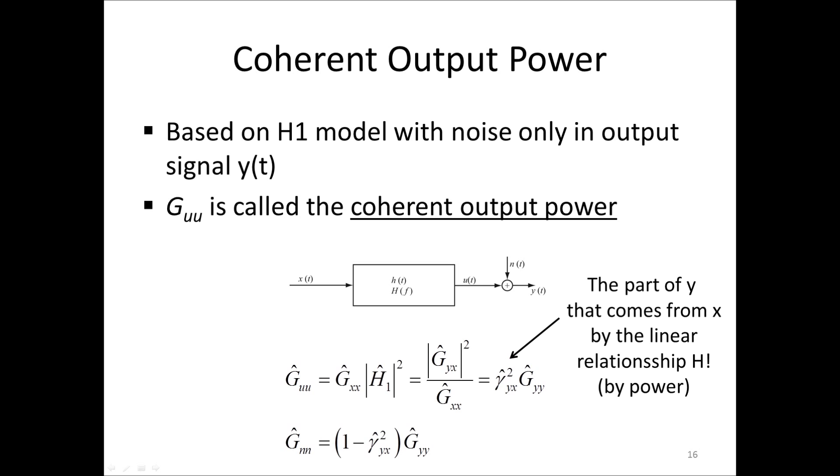From the expression of GUU, we can now find the interpretation of the coherence. The coherence tells how much of the signal Y that comes from X by the linear relationship H, all defined by the power spectral densities. So the coherence tells the linear relationship between the input X and the output Y. If the coherence is unity, there is a perfect linear relationship, and there is no contaminating noise N.